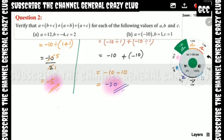Left-hand side is minus 5 and right-hand side is minus 20 — both are different values and not equal at all. Therefore, left-hand side is not equal to right-hand side. Verified! Very easy solution.